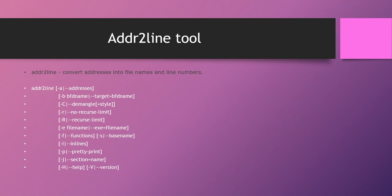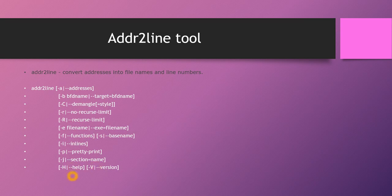The addr2line tool supports many input options. You can type addr2line -H to see all the flags. The most important flag is -C, which is used to demangle — it converts the address into a line number and file name. -R means no recurse limit. -E is used to provide the file name. -F will also display the function name where the issue is seen. -S displays the base name, and -P is pretty print, which gives user-friendly output. -H gives help and -V gives the version.